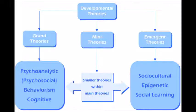Mini theories are theories somewhat narrower in scope. Examples of emergent theories include socio-cultural theory, epigenetic theory, and social learning theory.